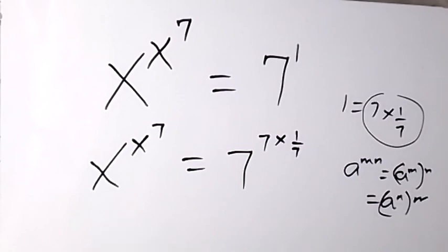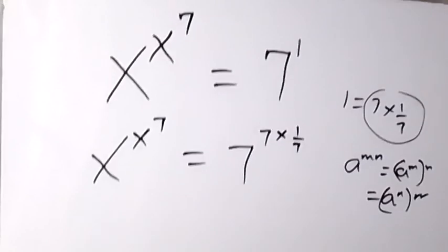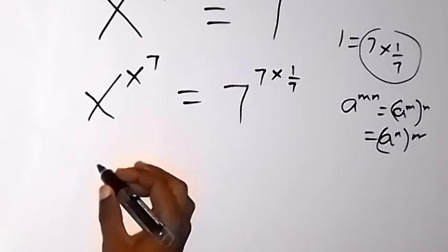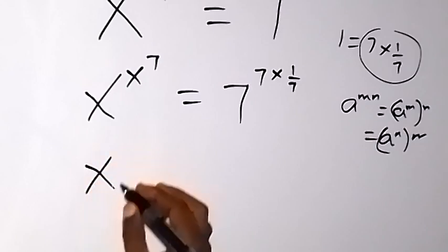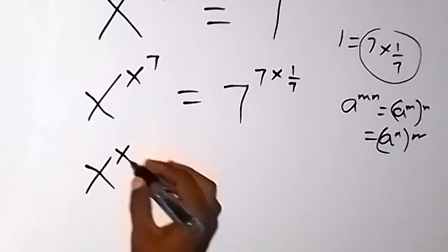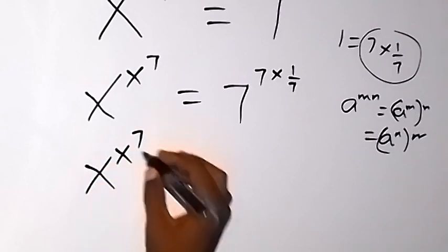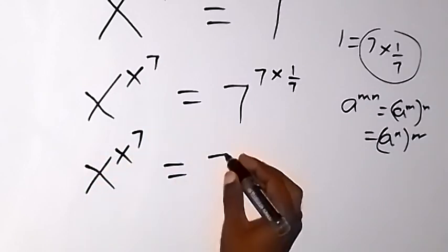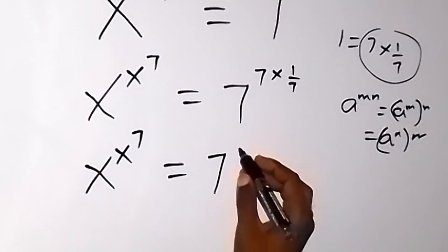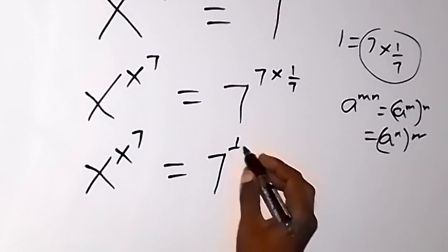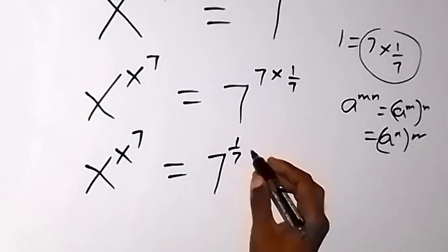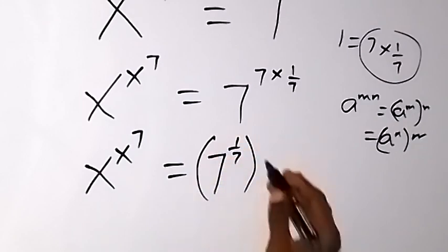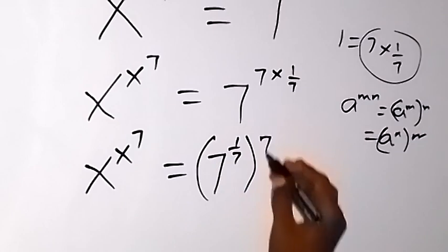So from here, this will become x raised to power x, then raised to power 7, which gives us 7 raised to power 1 over 7, then raised to power 7.